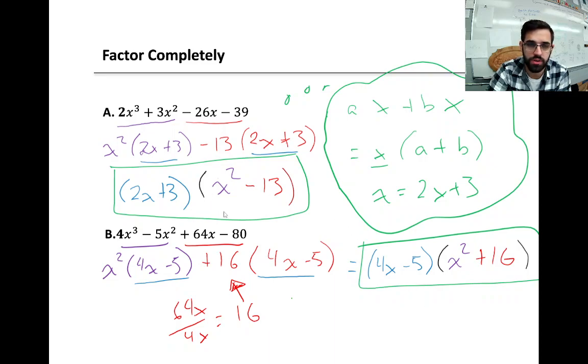Okay, I do notice there's a difference of squares in example a, but if we square root that, we get an irrational square root of 13. So we're not going to do that. I'm not going to go there.